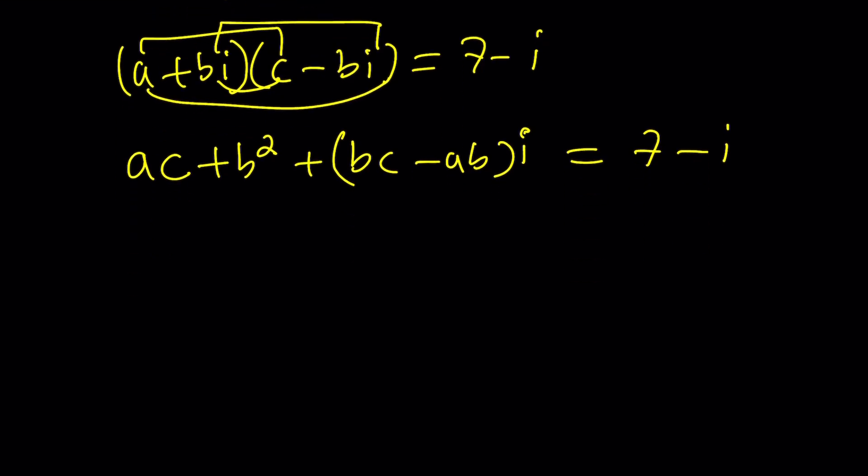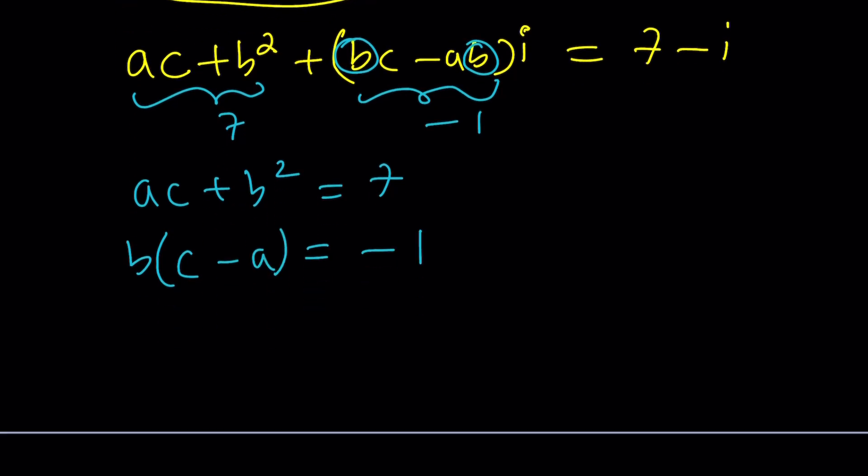Again, these two complex numbers are equal. This is supposed to be 7. This is supposed to be negative 1, right? The equality of two complex numbers. So, that gives us a system. Nice. And then we can kind of factor out the B here and write it as C minus A. I think that should be an A. And now we get equals negative 1. Awesome.